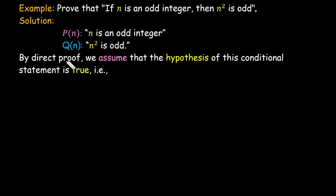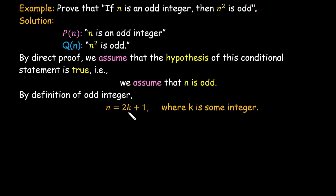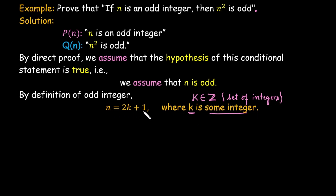In the direct proof we assume the hypothesis is true, so we assume n is odd. By definition of odd integer, n can be written as 2k plus 1, where k is some integer (k belongs to the set of integers). Now since n equals 2k plus 1, we need to move towards showing n squared is odd, so we take the square on both sides.